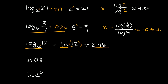Just a couple more. We have the natural log of 0.3 — for these you always need your calculator. The natural log of 0.3 is equal to approximately negative 1.2. And the last one is the natural log of e raised to the fifth power. Natural logs and e's basically cancel each other out, so whatever is in the exponent is your answer. You don't even need a calculator for this one — it's simply equal to 5.